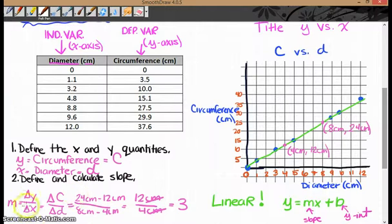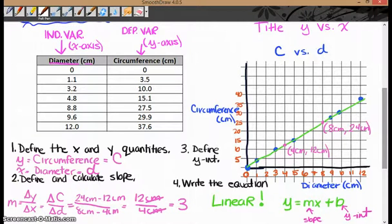Okay, so now I've calculated my m, so what's the next step? The next step will be to define the y-intercept, and this is pretty easy because all we need to do is look at the y-axis and find out what the value is when x is equal to 0. So when x is equal to 0 here, circumference is equal to 0 centimeters, so I'm going to say that b, the symbol for the y-intercept, is equal to 0 centimeters.